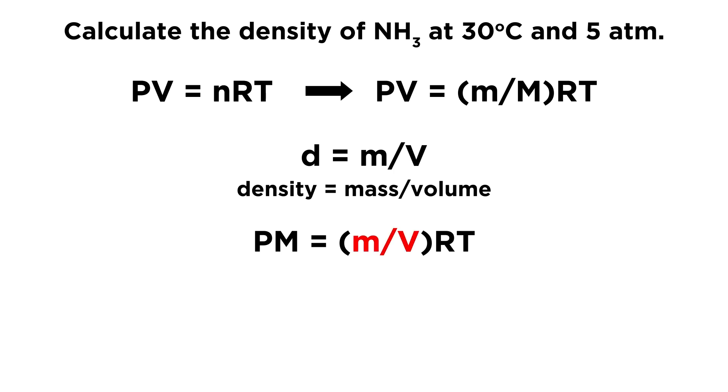Now this is very important because we have put m over V right here where we want it, and that means we can change that to density because mass over volume is density. And so now we have density in our equation, and we can solve for it. So d is going to be equal to PM over RT.